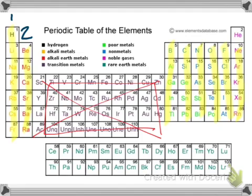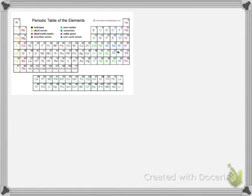The only exception to those, if you will remember from class, will be helium. Helium, although it's in the 8 column, actually has 2 because it only has 2 electrons and it fills in that valence electron shell. So that's just the review on valence electrons.